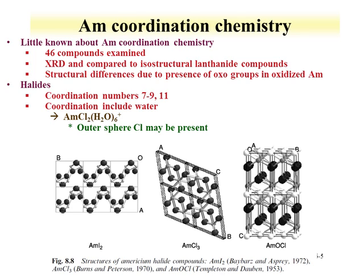Americium coordination chemistry is limited compared to some of the earlier actinides we've examined. There are about 50 known coordination compounds, primarily examined through X-ray diffraction. Often the data is collected and the resulting structure is compared to lanthanide compounds, with the idea that americium-3 would be isostructural to trivalent lanthanides. Halides have been examined with relatively large coordination numbers, anywhere from 7 to 11, and often these coordination environments include water. In some species, such as the chloride, the chloride may be coordinated through an outer sphere with the americium.